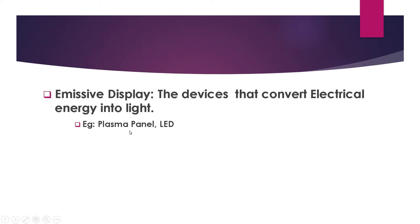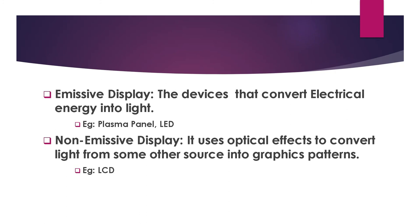Emissive display devices are the devices which convert electrical energy into light. Examples include plasma panels and LED. Non-emissive displays use some optical effects to convert light from other sources into graphics patterns. The key difference is that non-emissive displays use optical effects — for example, LCD.